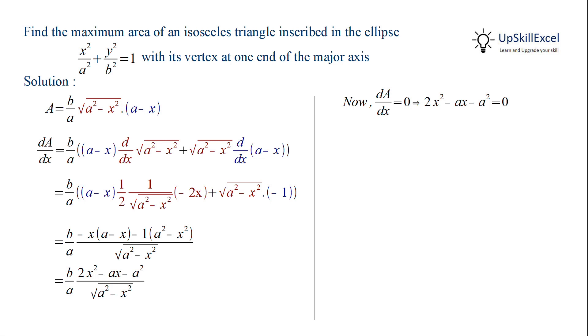To factorize this we'll replace -ax by -2ax + ax and then take 2x common between the first and second term and a common between the third and fourth term and then taking x - a common we get that (2x + a)(x - a) = 0.